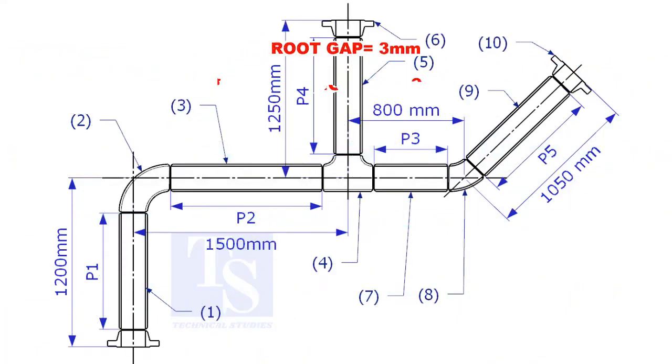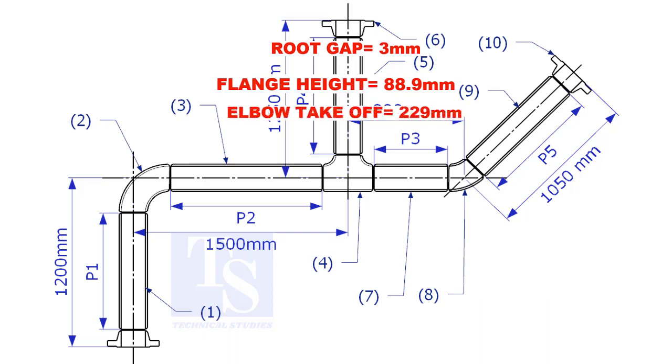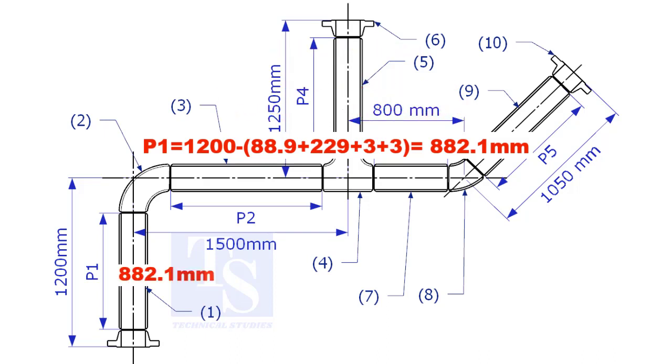Assume the root gap is 3 millimeters. Substitute the sum of the height of the flange, elbow takeoff, and 2 root gaps from the total length of 1500. Length of pipe P1 is 882.1 millimeters.